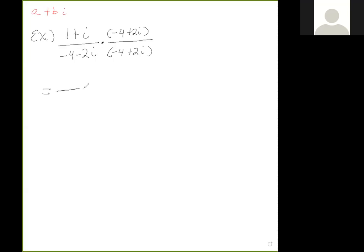Let's take a look and see what happens. So it would be 1 times -4 and 1 times 2i. So I have -4 + 2i, and then I have i times -4, so -4i, and i times 2i, so +2i².